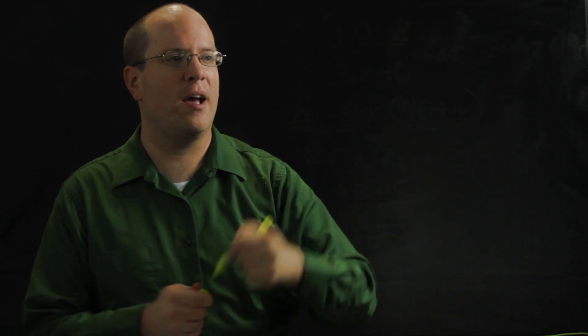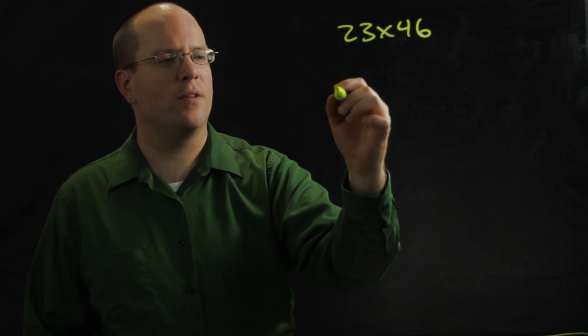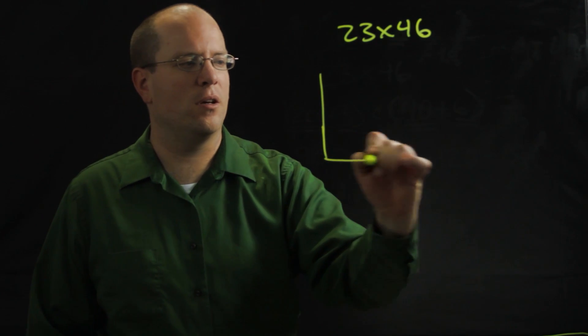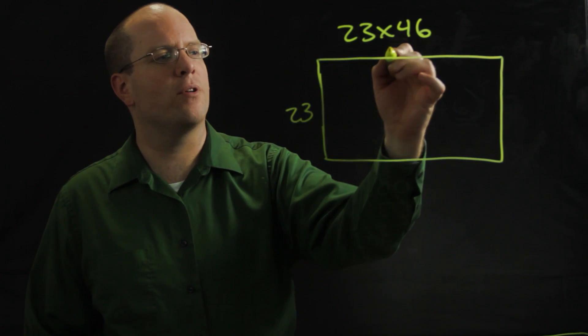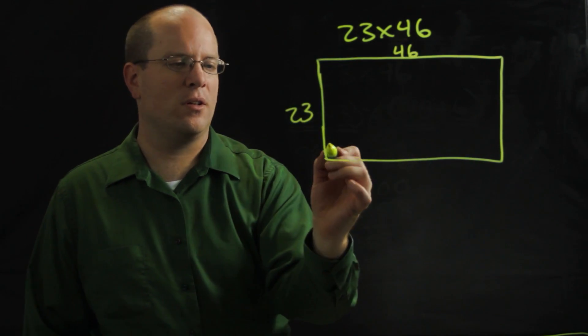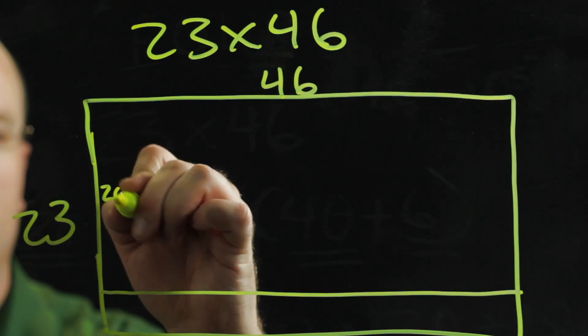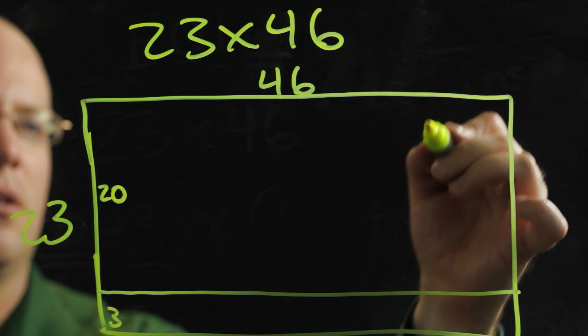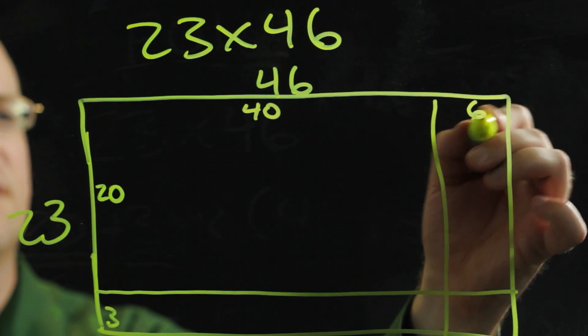So we had 23 times 46. If you represent this as a rectangular array, that's 23 by 46. Now I'm going to break this into 20 and 3 and 40 and 6.